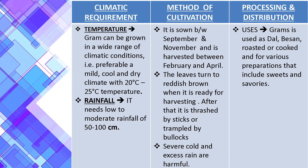Gram is used as daal, besan, roasted, cooked, and for various preparations that include leaves and cereals. You can eat besan halwa; the green leaves are also used as vegetables. It is also used as fodder for cattle. The major producing areas are Uttar Pradesh, Madhya Pradesh, Rajasthan and Haryana.